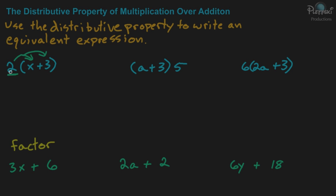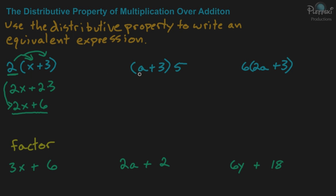So this one: 2 times x plus 3. We distribute the 2 to the x, so you get 2x. And then you also distribute the 2 into the 3, so it'll be plus 2 times 3, or 2x plus 6. So 2x plus 6 is equivalent to 2 times x plus 3, and that's using the distributive property.